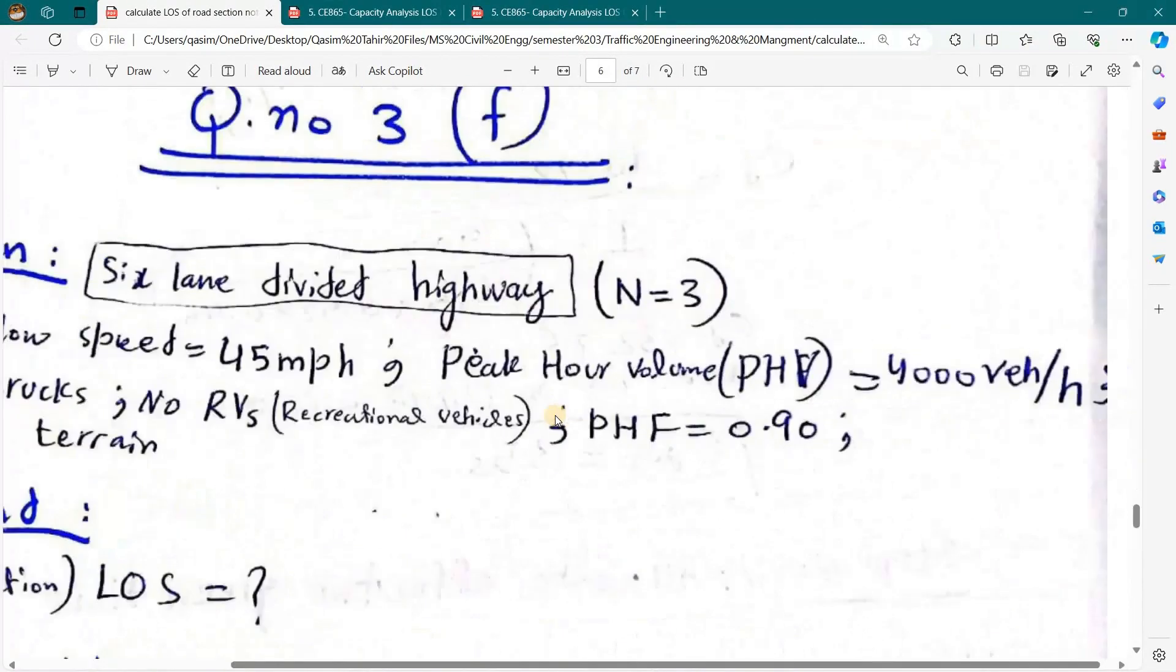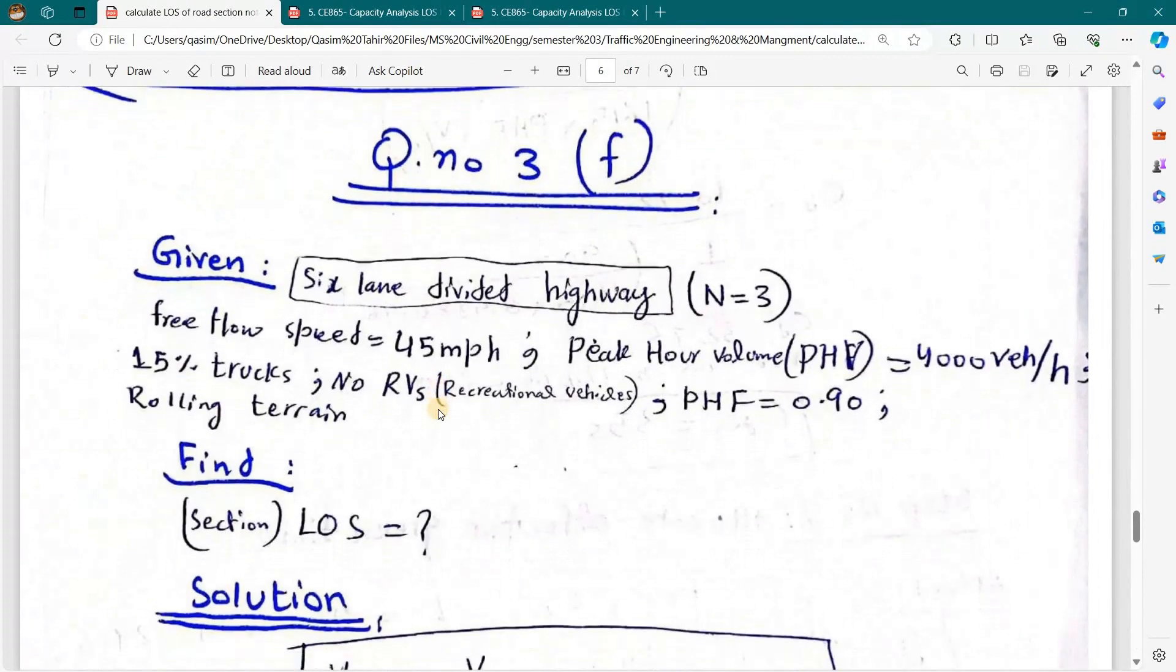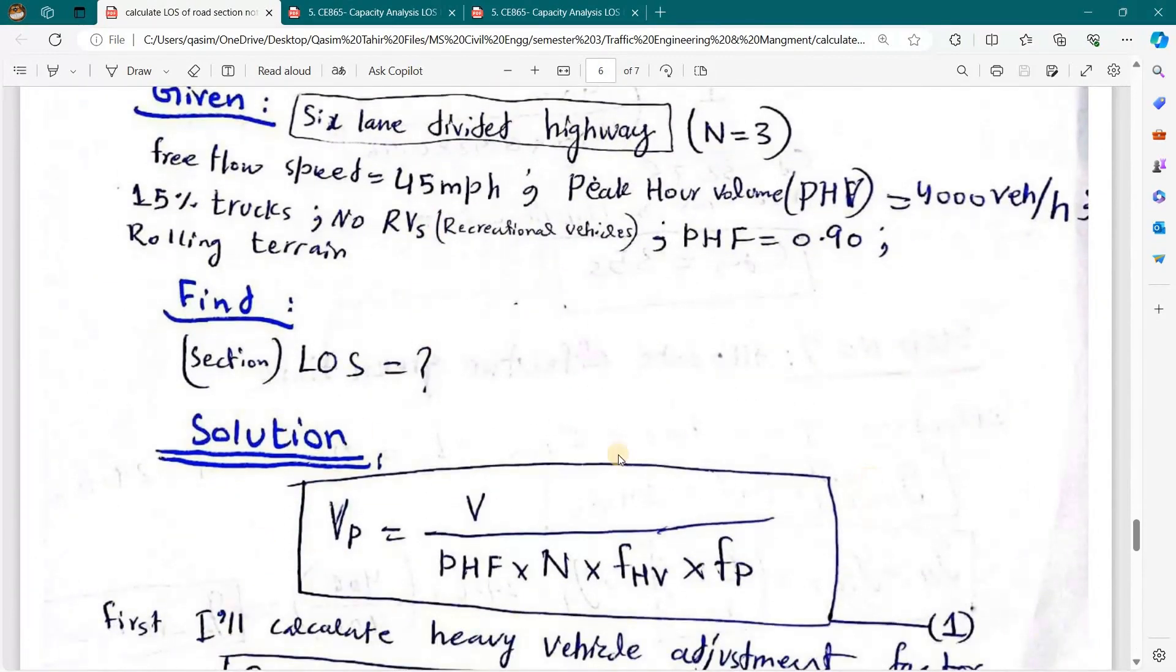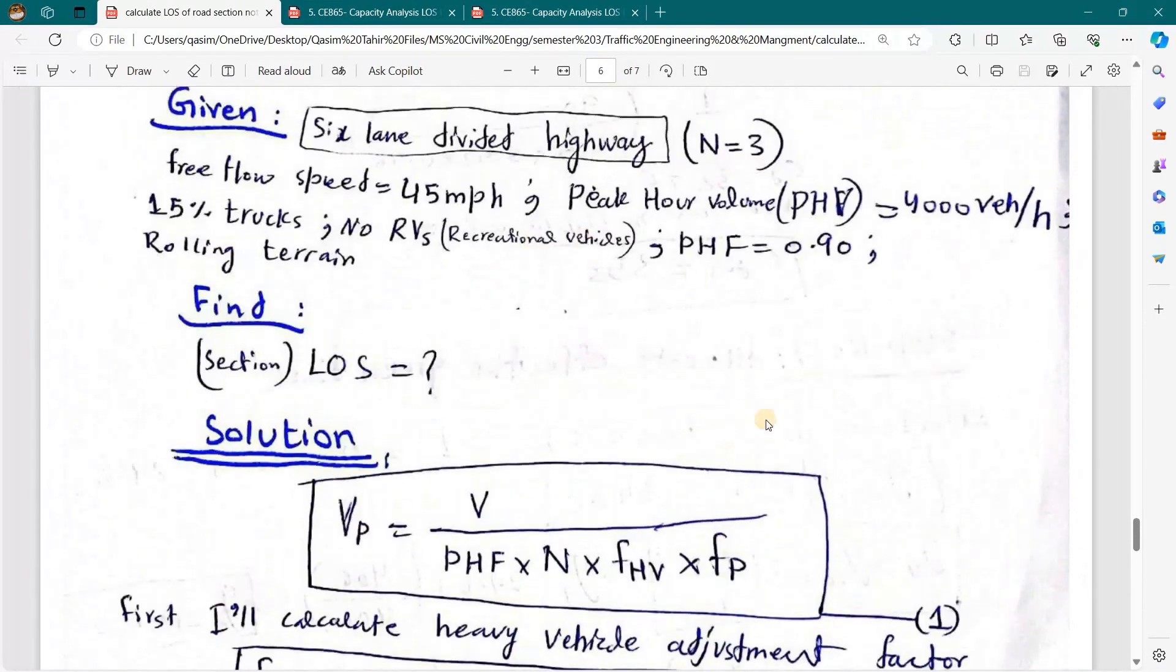Now here I write the required data and we have this formula to calculate level of service of a highway section. First we convert all the volume into passenger car equivalent volume by using this formula.